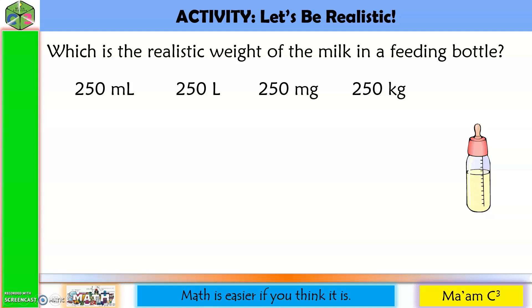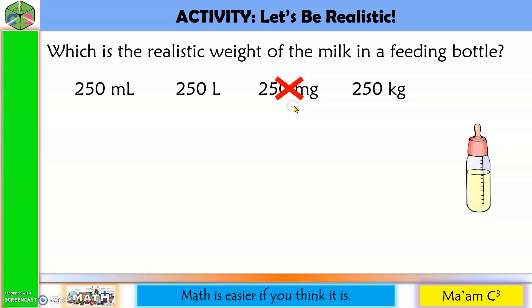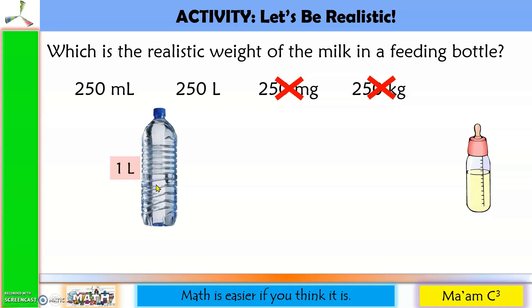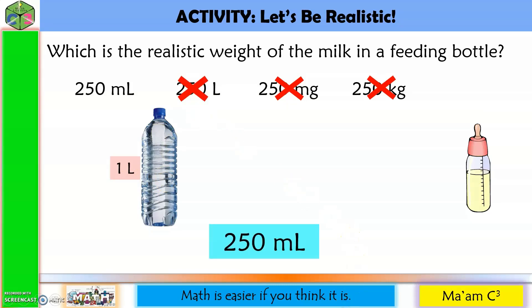Number two: which is the realistic volume of the milk in a feeding bottle — 250 ml, 250 liters, 250 milligrams, or 250 kilograms? Since this is a liquid, milligrams and kilograms are not appropriate units. The feeding bottle is clearly not even 1 liter, so 250 liters is also out. The correct answer is 250 ml.